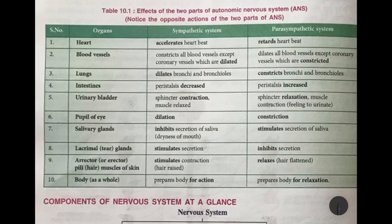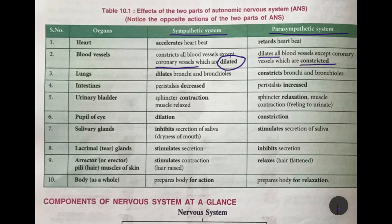This table shows how the sympathetic and parasympathetic systems work in opposition to each other. The sympathetic system accelerates the heartbeat while the parasympathetic retards it back to normal. All blood vessels are constricted except the coronary vessels, which are dilated so that more blood flows to the heart, whereas the parasympathetic brings all blood vessels back to normal with coronary vessels constricted.